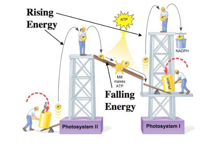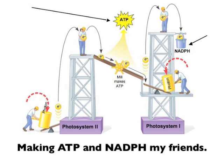Non-cyclic flow is also called the Z-scheme. Put C on its side and see what I mean. Electrons rise in energy, then fall and rise again, making ATP and NADPH. A variation on this is cyclic flow, which makes ATP — no NADPH or O2.